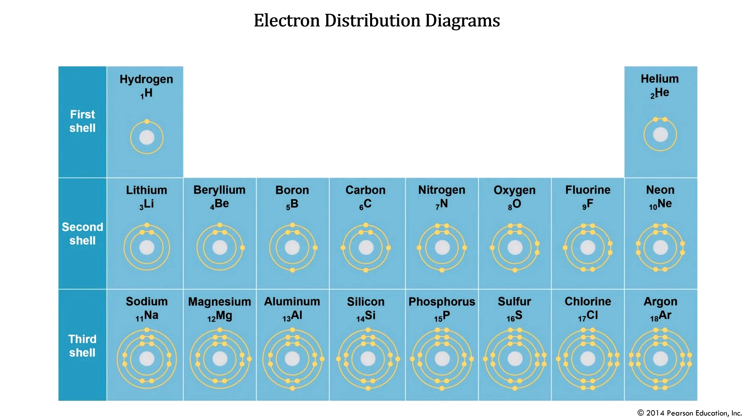Here we have a subset of the periodic table that shows an electron distribution diagram for each element. These diagrams highlight the number of shells an atom has, the number of electrons in each shell, and the pairing of these electrons.